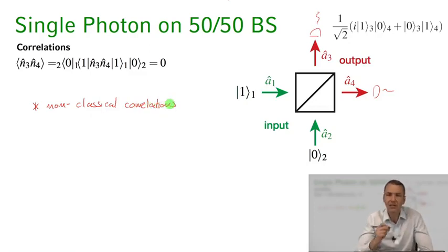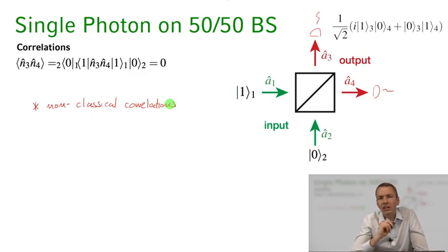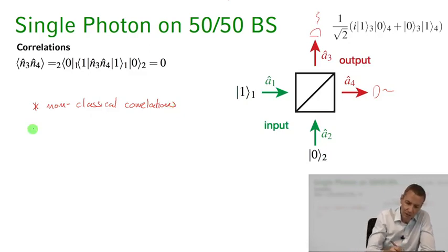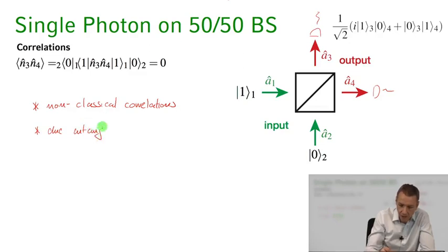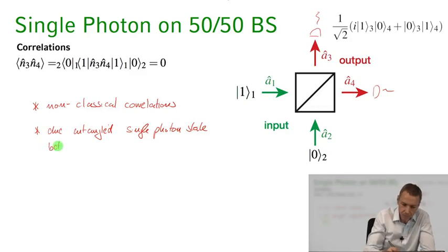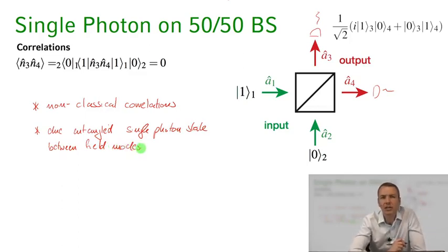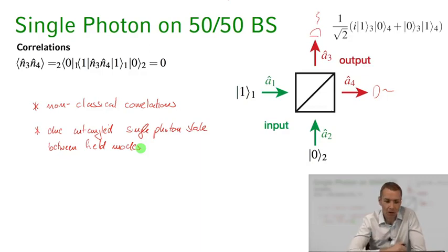This shows us again that a Fock state — a one-photon Fock state — is a very non-classical thing. If we put it on a beam splitter, we get results that we could not obtain with any classical fields, due to the entangled single-photon state between the field modes. Just this simple experiment of putting a single photon on a beam splitter gives a result that no classical theory could ever predict. That's all I wanted to tell you about the quantum beam splitter.